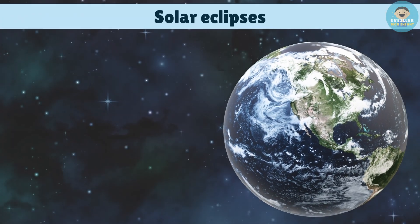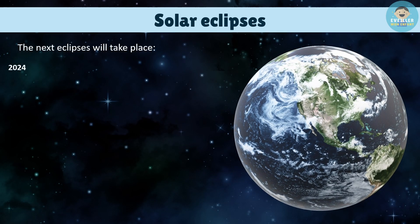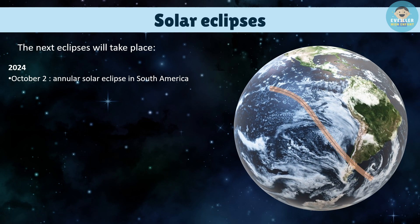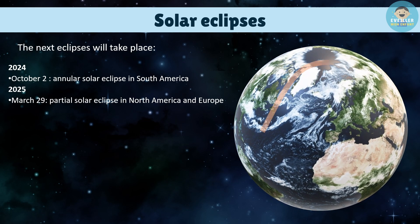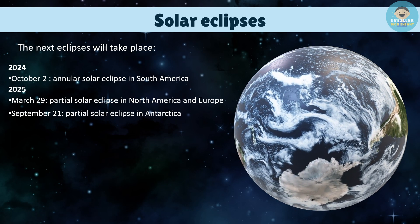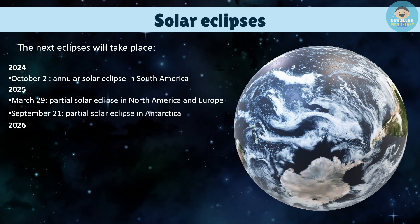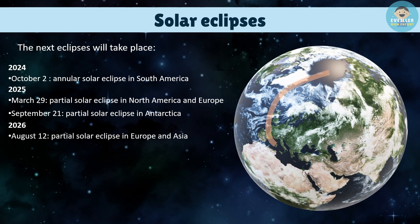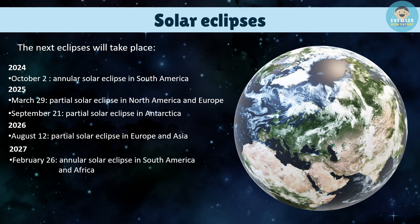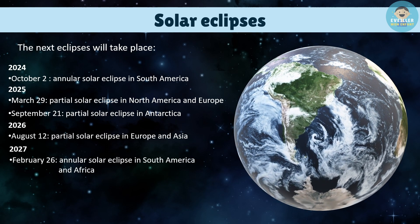After this eclipse, the next eclipses will take place as follows. In 2024, on October 2, there will be an annular solar eclipse in South America. In 2025, on March 29, there will be a partial solar eclipse in North America and Europe. On September 21, there will be a partial solar eclipse in Antarctica. In 2026, on August 12, there will be a partial solar eclipse in Europe and Asia. In 2027, on February 26, there will be an annular solar eclipse in South America and Africa.